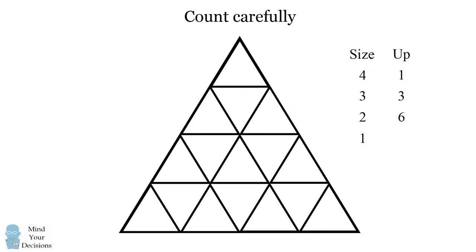Finally, we count the number of triangles of size 1 facing up. The bottom row has 4, the next row has 3, the next row has 2, and the top row has 1. 4 plus 3 plus 2 plus 1 is equal to 10.